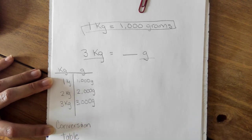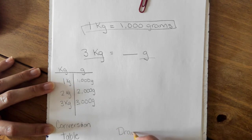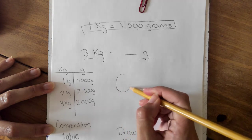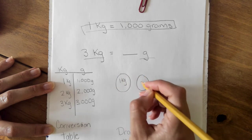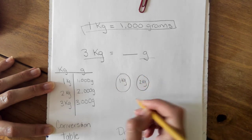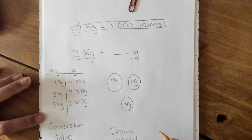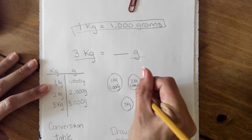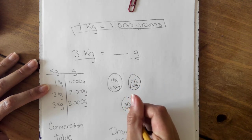The second strategy we learned this week is to draw a model. So I have this spaghetti squash: one kilogram, two kilograms, three kilograms. And inside of each group is not only a kilogram, but it's also one thousand grams. One thousand grams, two—since we have two here—three thousand grams.